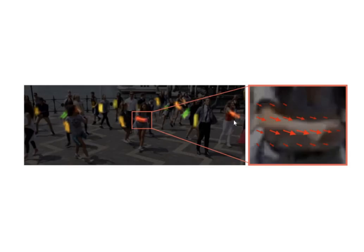The second branch gives the Part Affinity Fields (PAFs) — matrices that provide information about the position and orientation of the pairs. Since pairs are combinations of different parts, PAFs give information about which parts can be combined to form pairs, encoding both the x-direction and y-direction. There are a total of 38 different PAF outputs from the network.